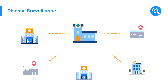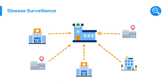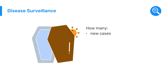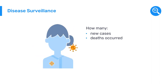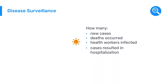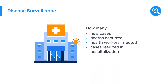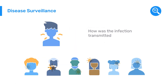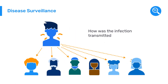To conduct COVID-19 disease surveillance, countries needed health facilities to report a number of data points on a daily or weekly basis, including how many new cases were reported, how many deaths occurred due to COVID-19, how many health workers got the infection, how many cases resulted in hospitalizations and discharges, how many tests were conducted, and how the infection was transmitted.